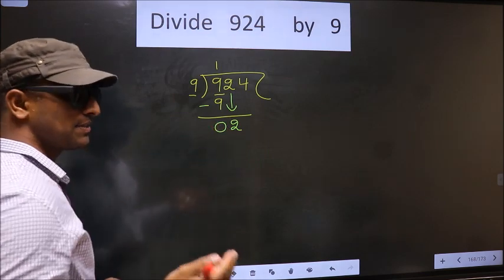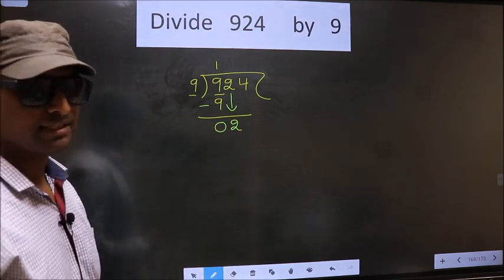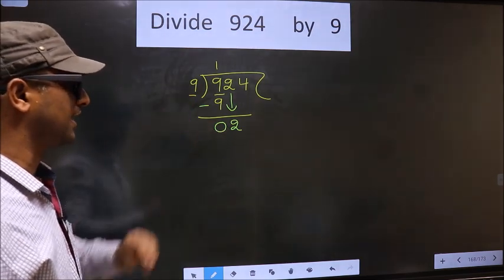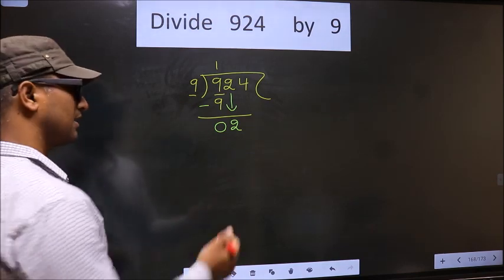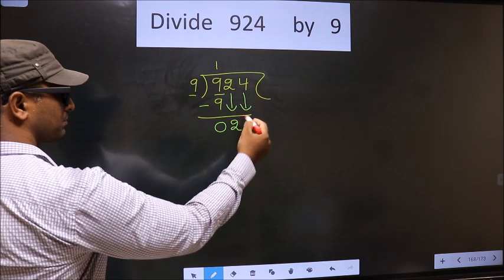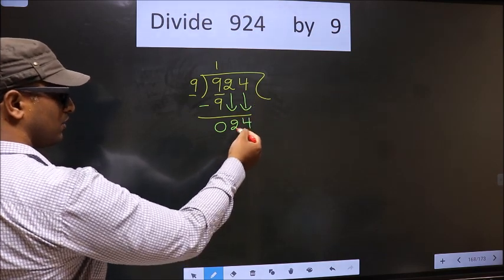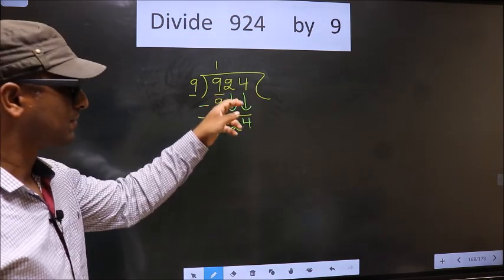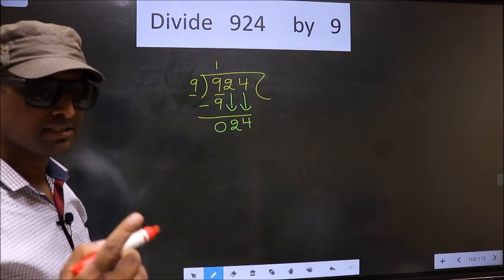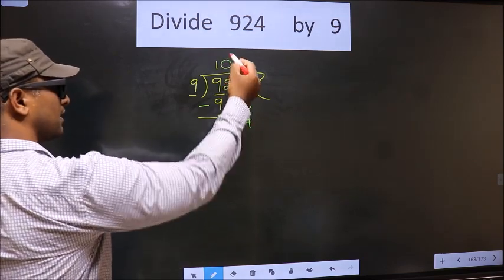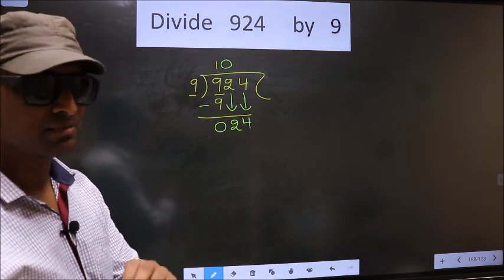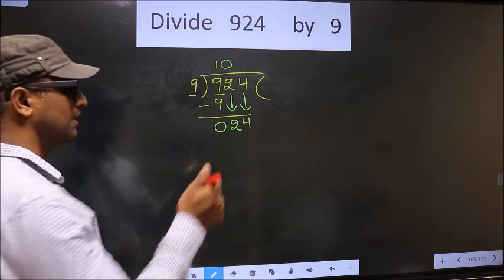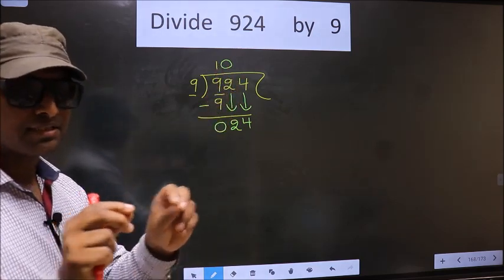This is where the mistake happens. And the mistake is this. Here we have 2 here 9. 2 is smaller than 9. So what many do is they directly bring down the beside number. So 4 down. Over here you have brought down 2 numbers. So whenever you brought down 2 numbers then compulsory put 0 in the quotient. I repeat. Whenever you brought down 2 numbers then compulsory put 0 in the quotient. Remember this point.